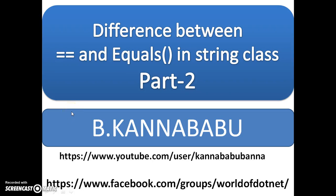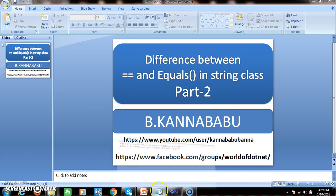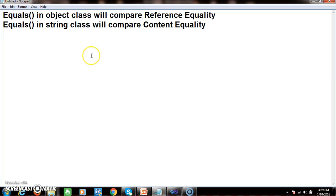Hi, this is Kanababu. In the last video I discussed about the equals method in object class. In this video we will discuss about equals method in string class. The equals method in object class will compare the reference equality, whereas equals method in string class will compare the content equality.